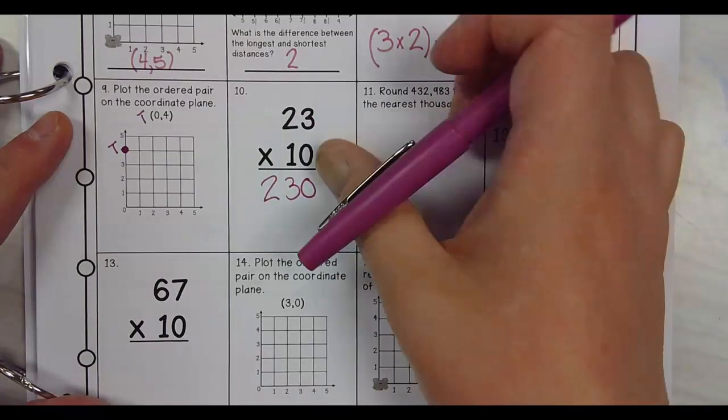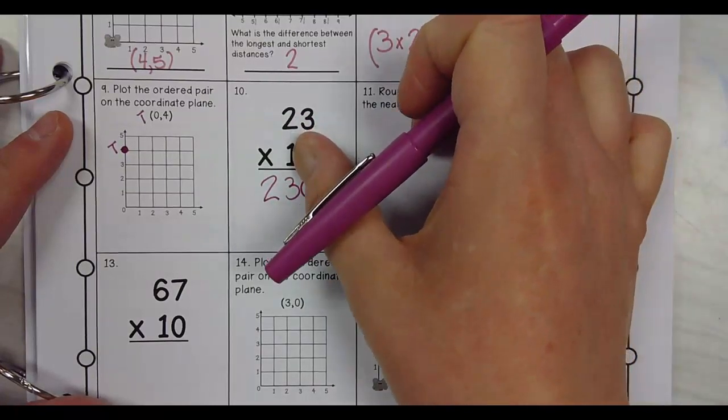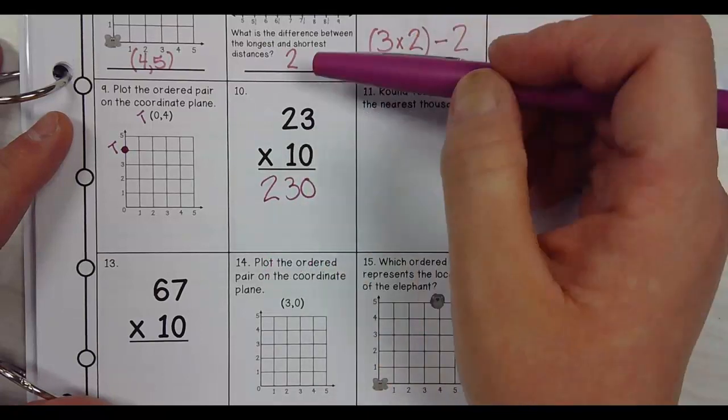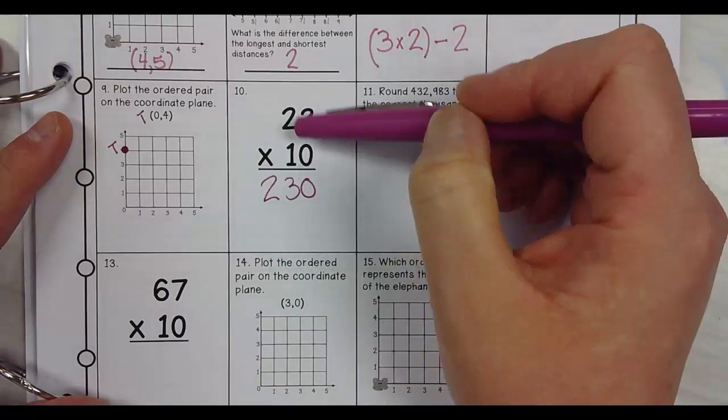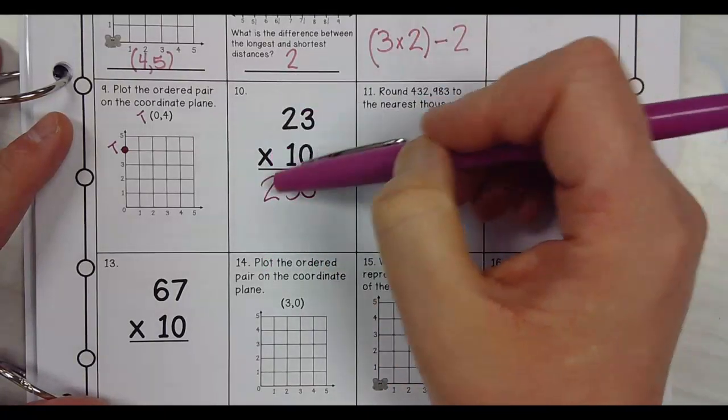So if I say 23 times 1, it's 23. My friend said if I times 10 times 10, it's 100. So if I say 23 times 10, it's going to be 230. You are right.